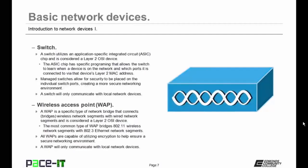One caveat with switches: a switch will only communicate with local network devices, which means it cannot communicate with remote networks. Then there is the wireless access point, or WAP. A WAP is a specific type of network bridge that connects or bridges a wireless network segment with a wired network segment, and it is also considered a Layer 2 OSI device. The most common type of WAP bridges an 802.11 wireless network with an 802.3 Ethernet network segment.